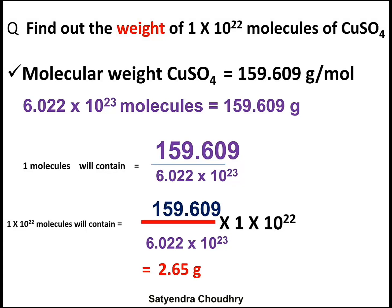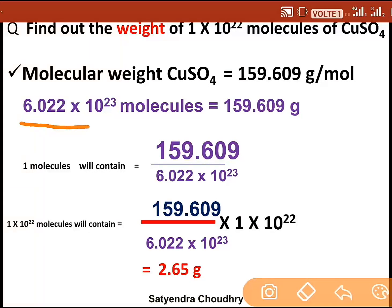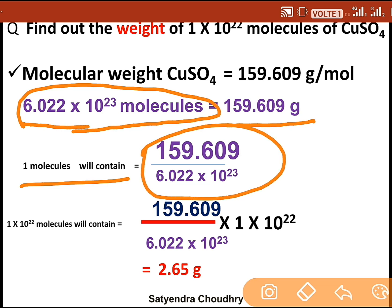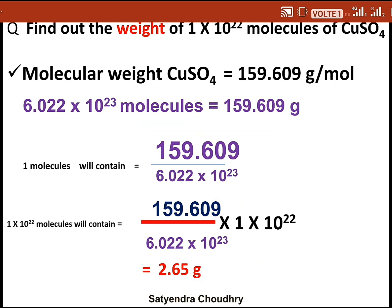In the second example, we calculate the weight of 1 × 10²² molecules of copper sulfate. The molecular weight of copper sulfate is 159.6 grams per mole, so 6.022 × 10²³ molecules contain that weight. Calculating for 1 × 10²² molecules, the answer is 2.65 grams.